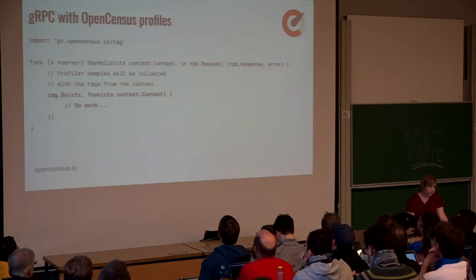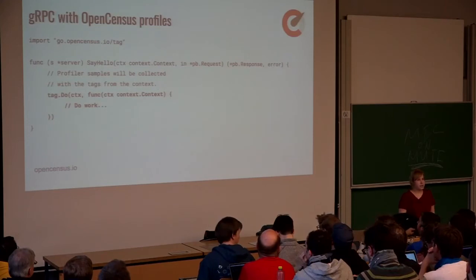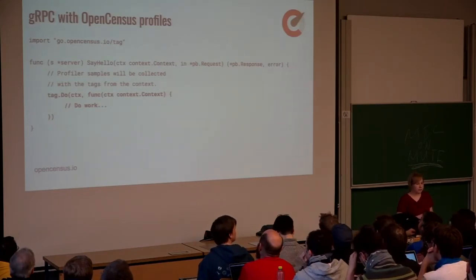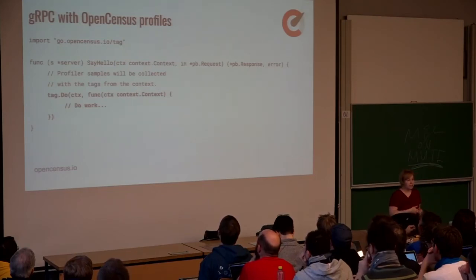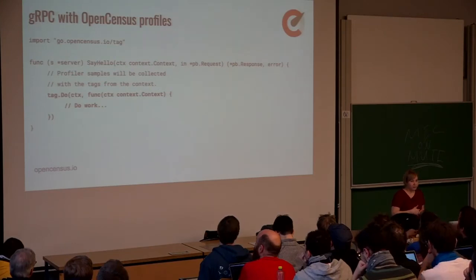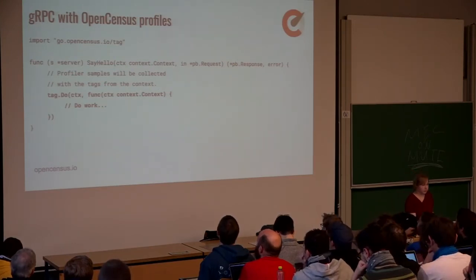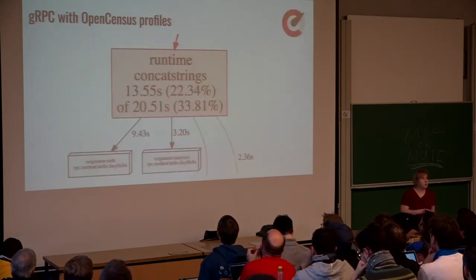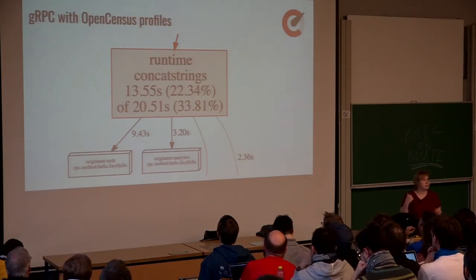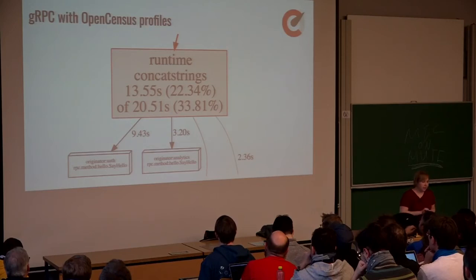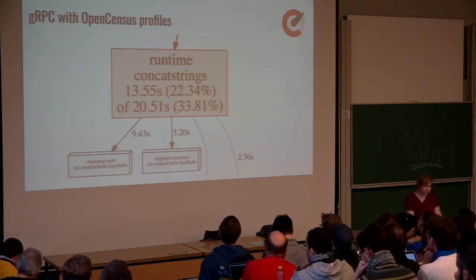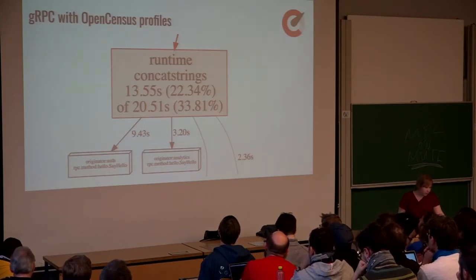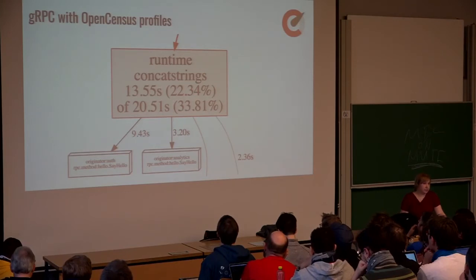And OpenCensus also provides profile support. If you use tag.Do, we collect actually CPU samples with the tags inside the incoming context. And then you can see the hotspots in your code for very specific requests, RPC names, and so on with the dimensions you have defined as tags. This is a GRPC server I profiled with OpenCensus. We're looking at the typical visualization of PPROF data. You can see the runtime CONCAT strings spent 9.43 seconds for RPCs coming from the authentication servers and 3.20 seconds for the RPCs coming from the analytics servers.